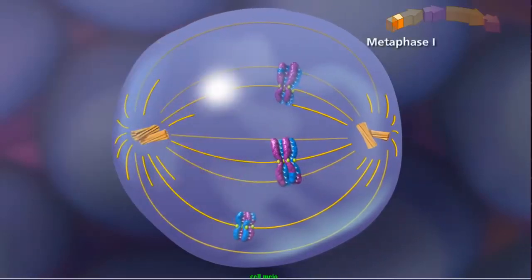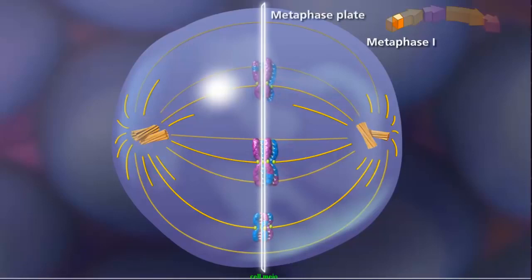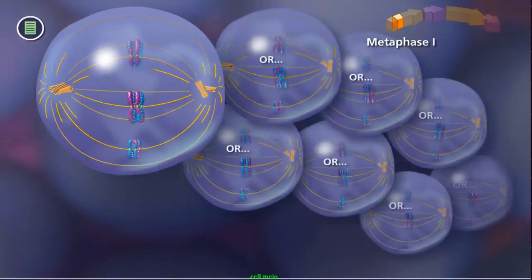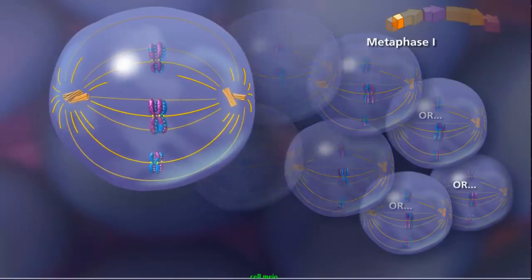During metaphase I, bivalents randomly align along the metaphase plate. Due to independent assortment, this alignment is random and adds to genetic diversity.